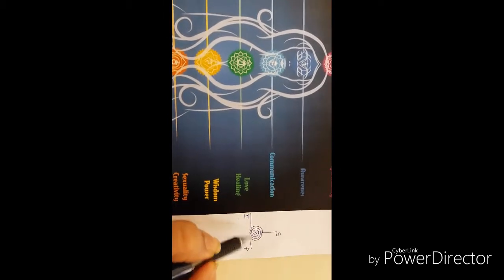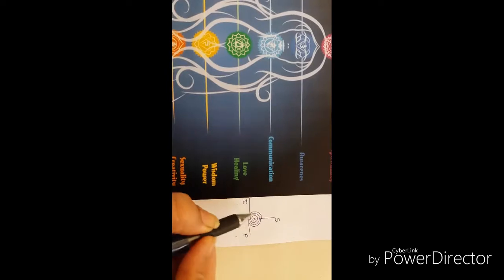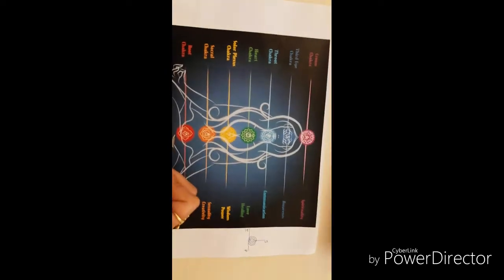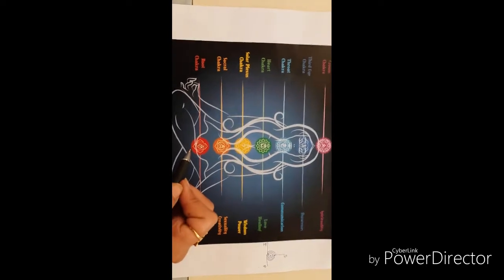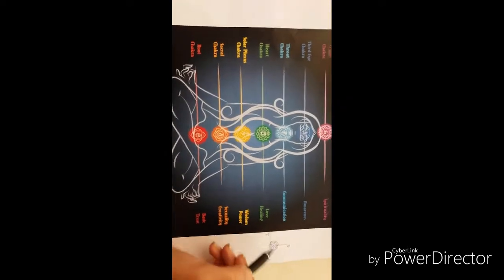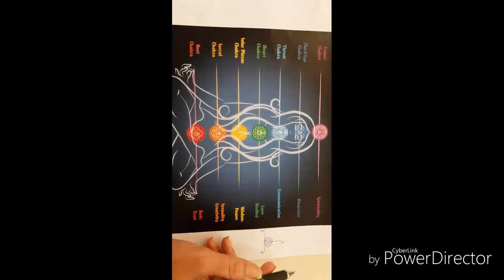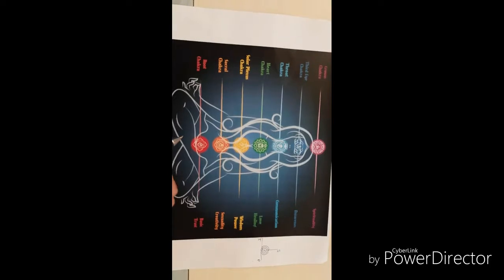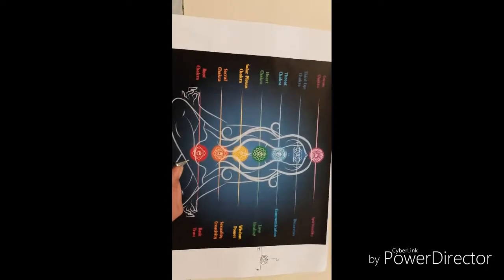Wherever these three nadis meet, major chakras form in our body. These are the seven chakras of our body. Other than this, we have many more chakras, but some are formed by meeting just two of them or any of their tributaries. But the major chakras are these seven chakras.